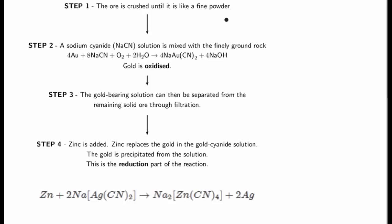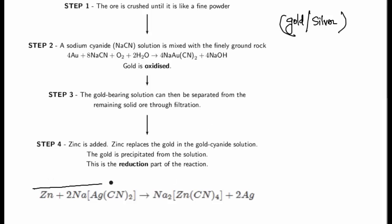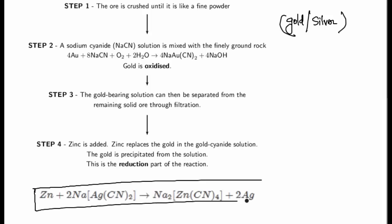This process is the famous MacArthur cyanide process, which is used for extraction of gold as well as silver. The important thing as far as the question is concerned is this reaction, and that zinc is acting as a reducing agent which is replacing the silver ions from its cyanide solution.